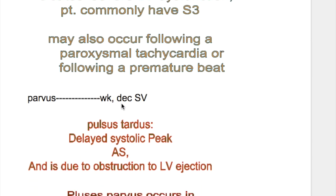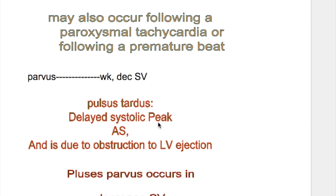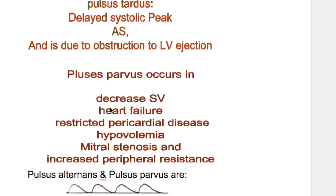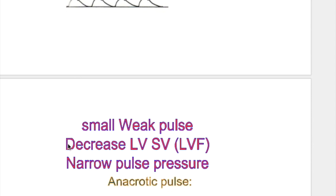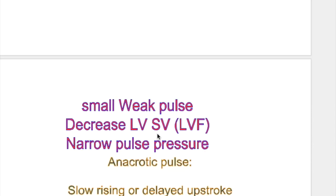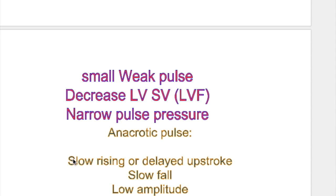Pulsus parvus is a weak pulse with decreased stroke volume. Pulsus tardus is a delayed systolic peak and occurs in aortic stenosis due to obstruction to left ventricular ejection. Cardiac causes of pulsus parvus are heart failure, restrictive pericardial diseases, and mitral stenosis. Non-cardiac causes are hypovolemia and increased peripheral resistance. Both pulsus alternans and pulsus parvus are small weak pulses with decreased left ventricular stroke volume, as in left ventricular failure, and have a narrow pulse pressure.